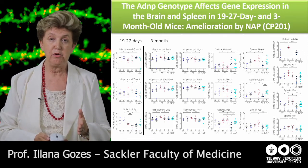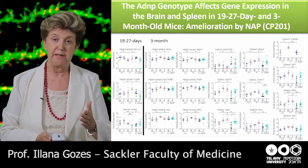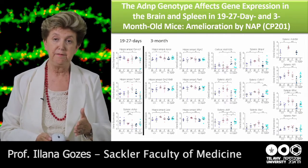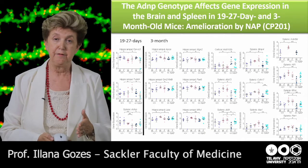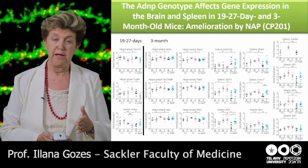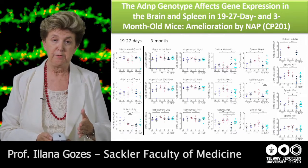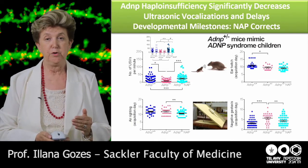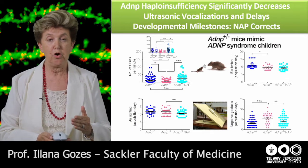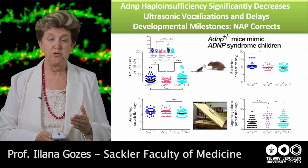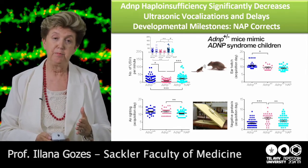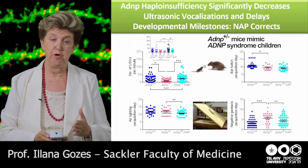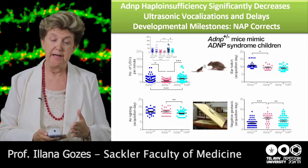These effects occur in young animals at 19 to 27 days and also in three-month-old animals. Initially we gave NAPVSIPQ by injection, and then when the animals were weaned we gave it by intranasal administration daily. We also looked at developmental milestones, because all ADNP children are actually slow in development — they have developmental delays. We looked to see whether the mice mimic this phenotype.